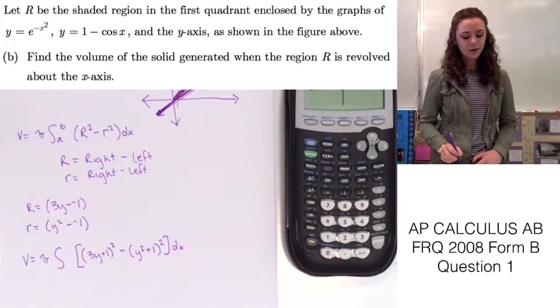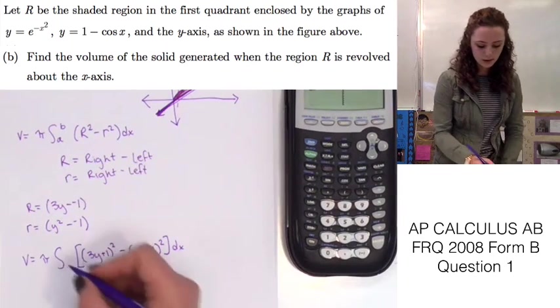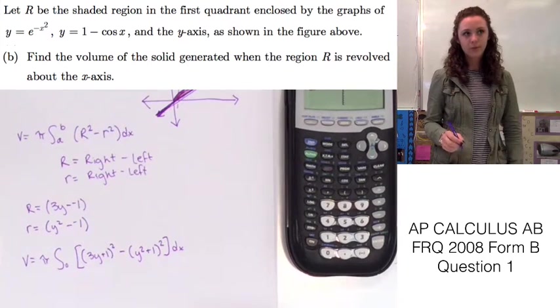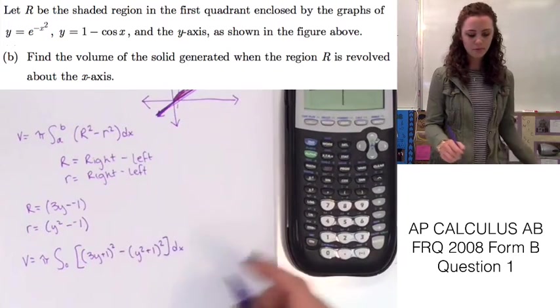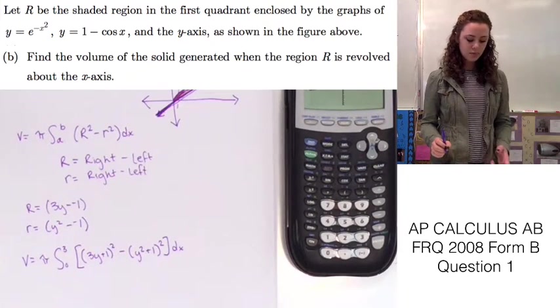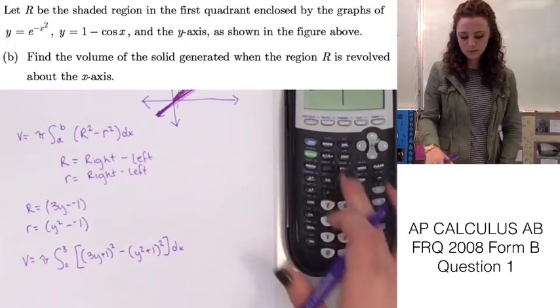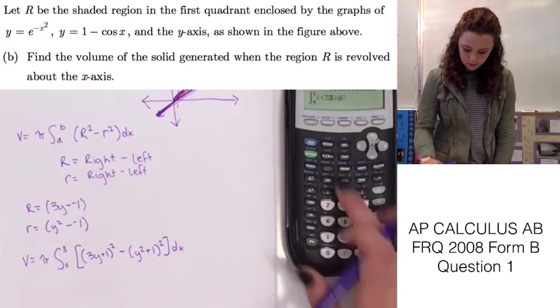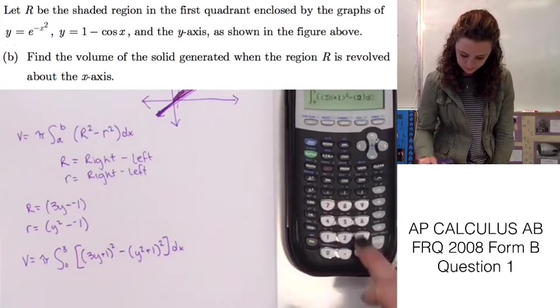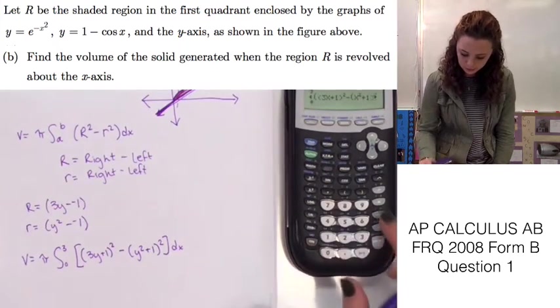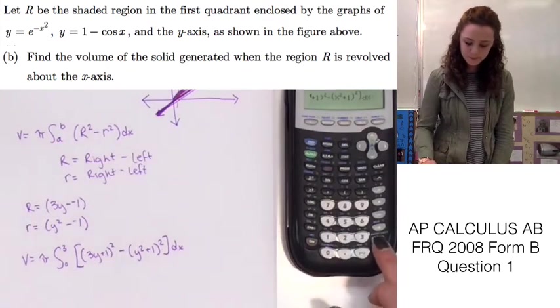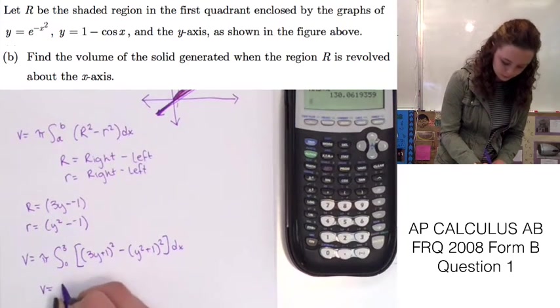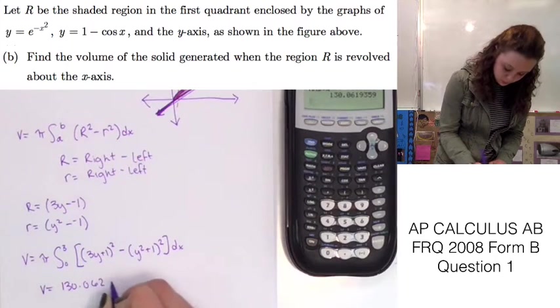Let's find the lower and upper limits. The lower limit is still going to be 0, because in part A when we found the points of intersection, they were at 0, 0 and 9, 3. So our lower point will be 0 and our upper will be 3. We can plug this into our calculator using the normal calculation function. Math 9, from 0 to 3. Just plug in this equation that we had already found. We know now that the volume is equal to 130.062 units cubed.